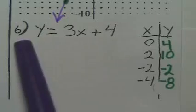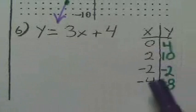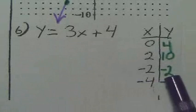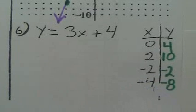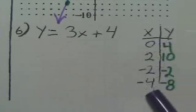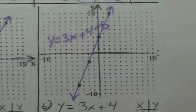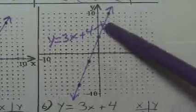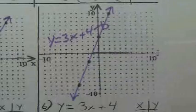For the last one, number 6, you should have (0, 4), (2, 10), (negative 2, negative 2), (negative 4, negative 4), and negative 8. And if you graph those points, these solutions should look like this. Notice how, again, my line is going through the points all the way to the very edges with arrows at the ends.